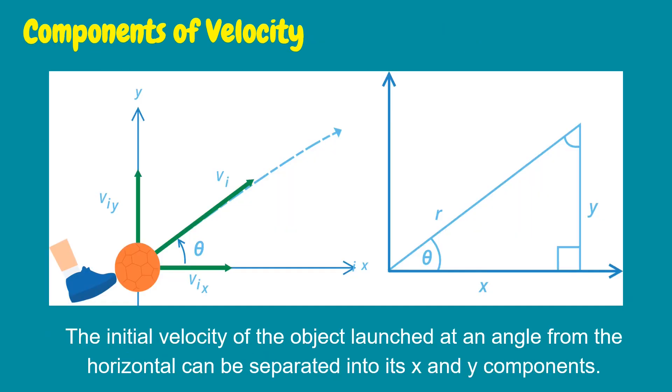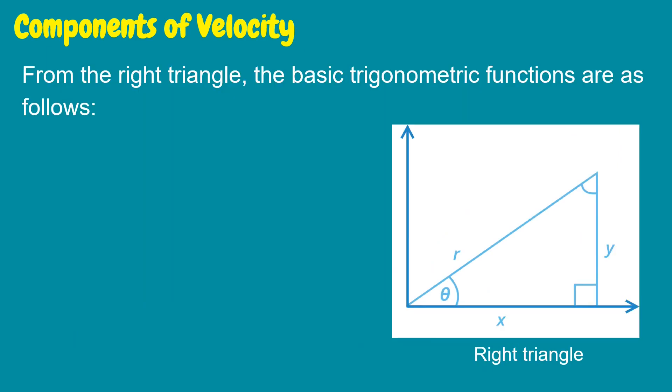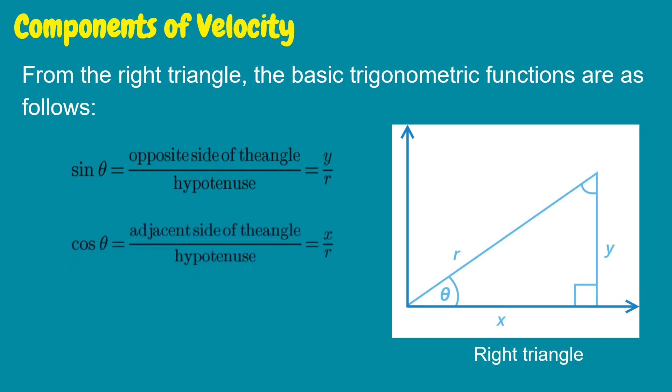The initial velocity of the object launched at an angle from the horizontal can be separated into its x and y components. From the right triangle, the basic trigonometric functions are as follows: sine theta equals opposite side over hypotenuse, cosine theta equals adjacent side over hypotenuse, and tan theta equals opposite side over adjacent side.